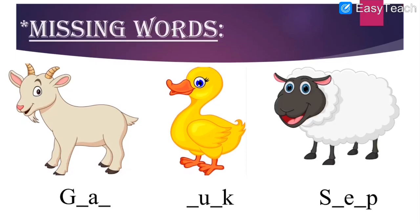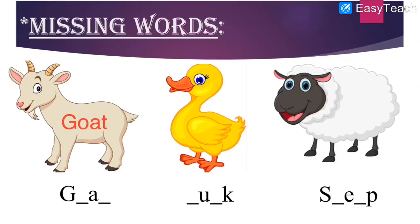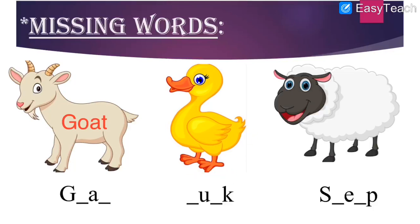Next: missing words. We have to fill in the missing alphabets. First picture: this is a goat. Let us write the spelling G-O-A-T, goat. Next: dash-U-K — I will give you three seconds. One, two, three — this is a duck. The spelling is D-U-C-K, duck. Last: the mouth is open, very cute little animal — we get wool from this animal. The first alphabet is S, last is P. This is a sheep, S-H-E-E-P. So: goat, duck, and sheep.